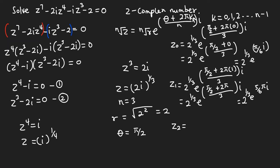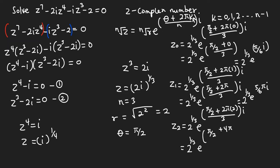For k = 2: z₂ = 2^(1/3) · e^((π/2 + 2π·2)/3 · i). We have π/2 + 4π all divided by 3. Simplifying: (π/2 + 4π)/3 = 3π/2 · (1/3)... giving 3π/2 divided appropriately. The result is z₂ = 2^(1/3) · e^(3πi/2).